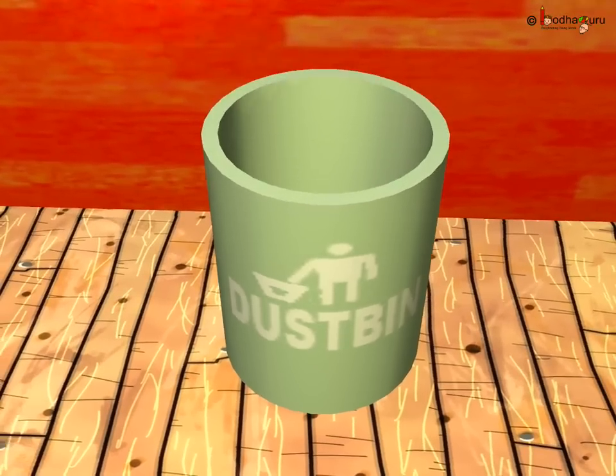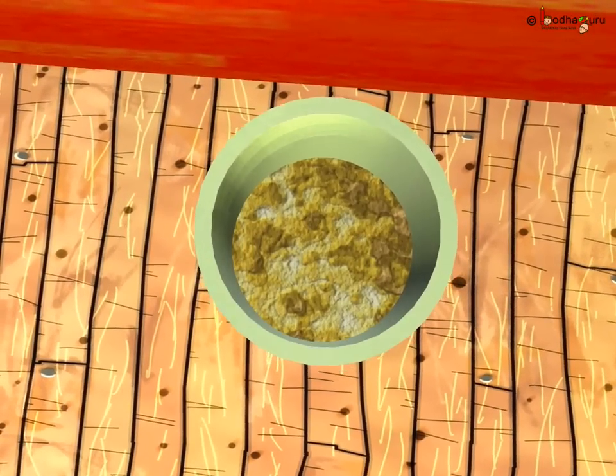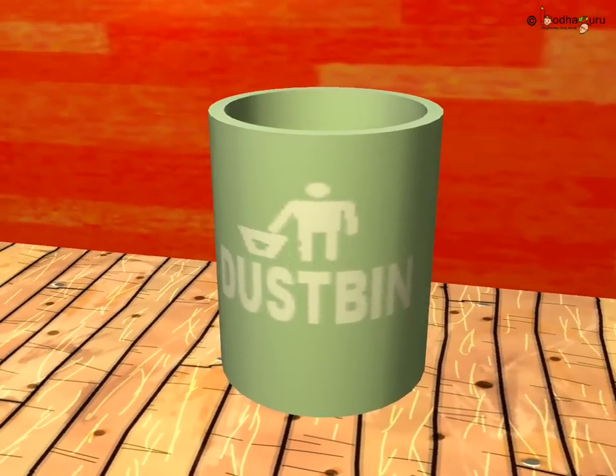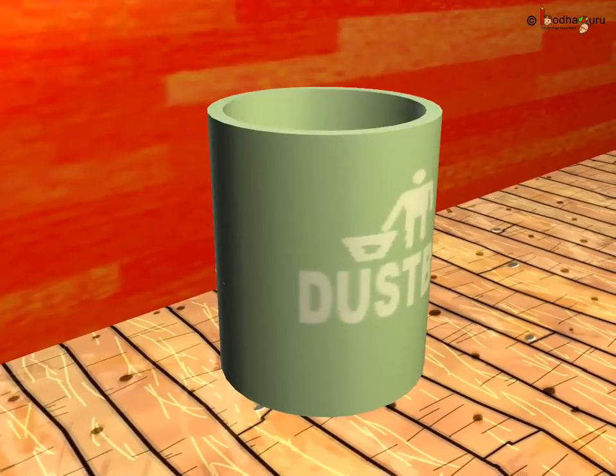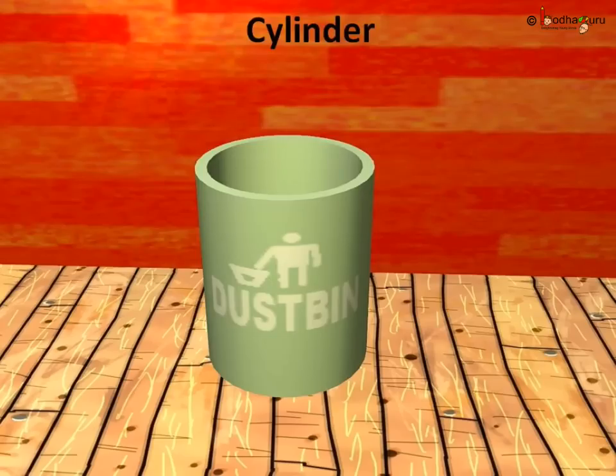Even the dustbin, it has depth too. We say it has a shape which is called a cylinder. So the shape of a dustbin is like a cylinder.